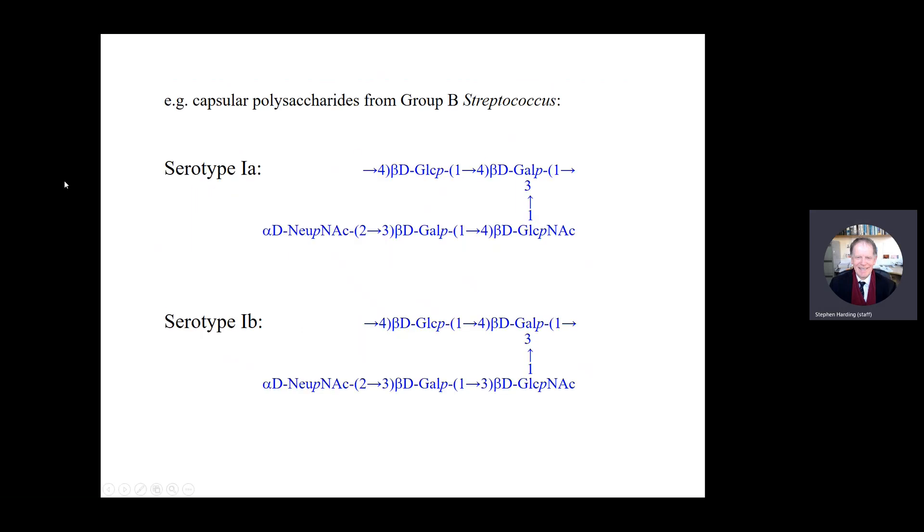For example here, these are capsular polysaccharides from group B streptococcus. This is one of the dangerous bacteria for which glycoconjugate polysaccharide vaccines have been generated against and Thomas McCallum's project has been based on these. You can see how useful the simple notation or the three, four, five, six letter notation. Imagine trying to describe these structures writing out the Haworth projections. Now can anyone see the subtle difference between these two serotypes of group B streptococcus? This one here and this one here. Anyone spot the difference?